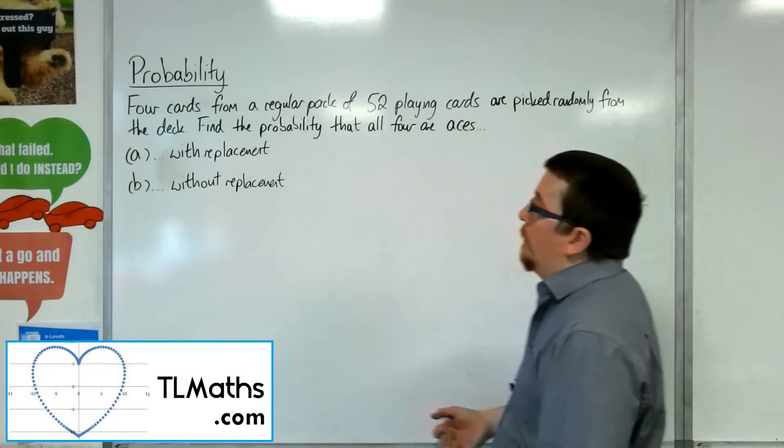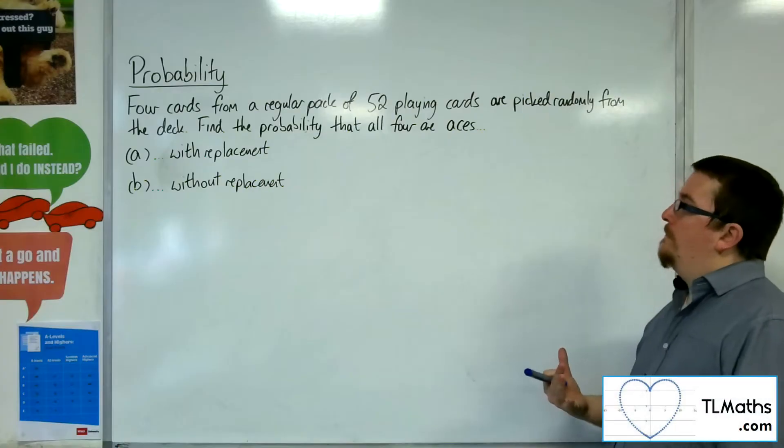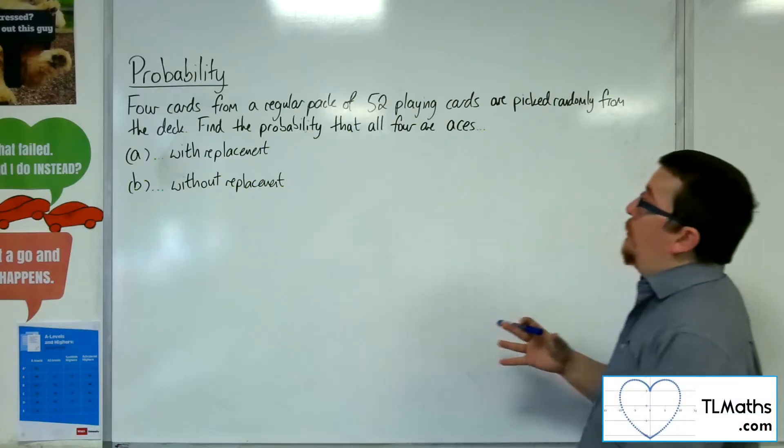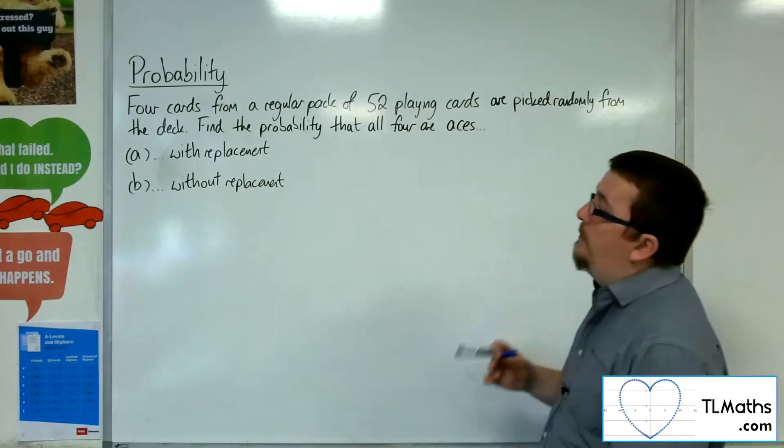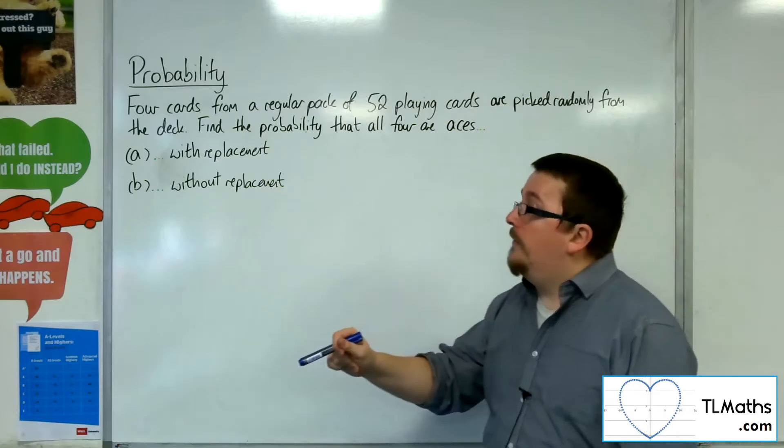Okay, so in this video, what I'm going to look at is a basic probability question, where we've got four cards from a regular pack of 52 playing cards are picked randomly from the deck. Find the probability that all four are aces.